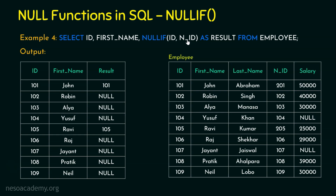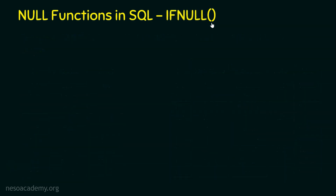We are done with the third null function, NULLIF. Note that NULLIF and IFNULL are different — the names are different. Let's move on to the last null function, which is IFNULL, and see how it operates.